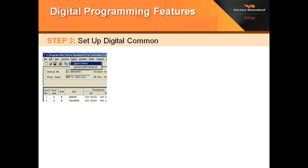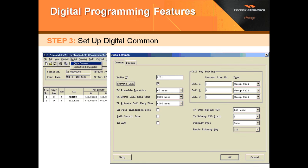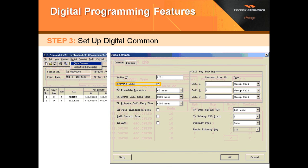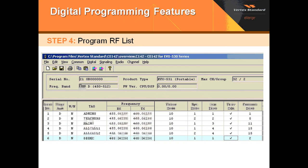Now that that's set up, we're going to go ahead and set up our digital common by clicking on Digital, then Digital Common. This window will come up, and we'll enter our radio ID — it's 2201, our first teacher. We're going to make sure that private call is checked so we can do communications with the principal. After that's selected, we'll click OK.